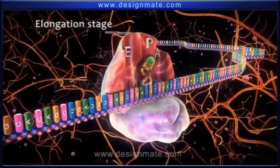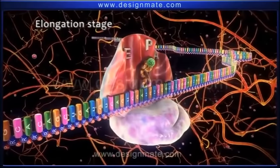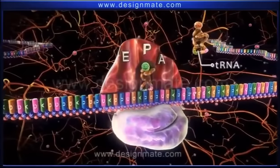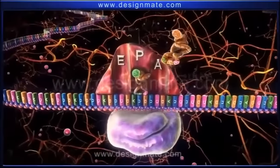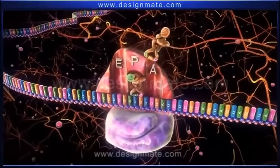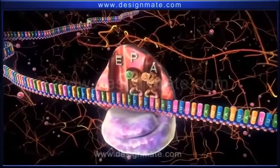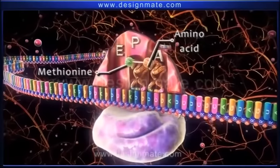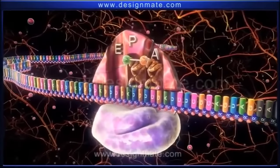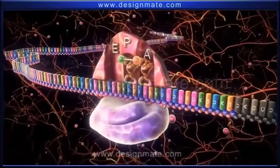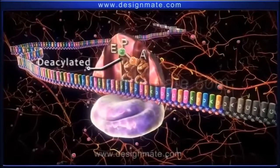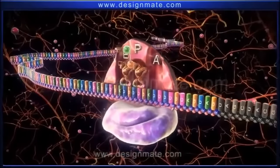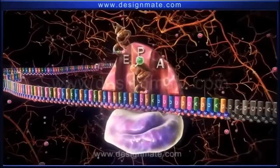This is followed by the elongation stage. During this stage, another tRNA carrying a molecule of an amino acid approaches the mRNA-ribosome complex and fits into the A site. Then a bond is formed between methionine and the amino acid molecule on the tRNA. As a result, met-tRNA becomes deacylated. The ribosome then advances a distance of one codon and the deacylated tRNA shifts to the E site, from where it dissociates.